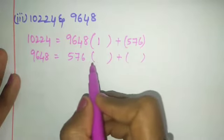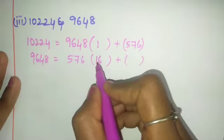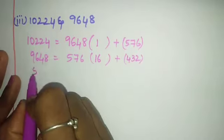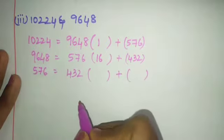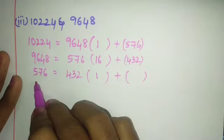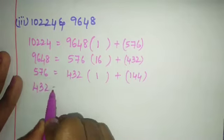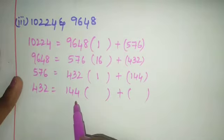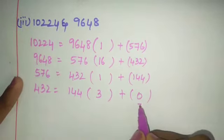9648 divided by 576: 576 × 16 gives remainder 432. Then 576 = 432 × 1 + 144. Subtracting 432 from 576 gives 144. Then 432 = 144 × 3 + 0. 144 × 3 is 432, so remainder is 0.